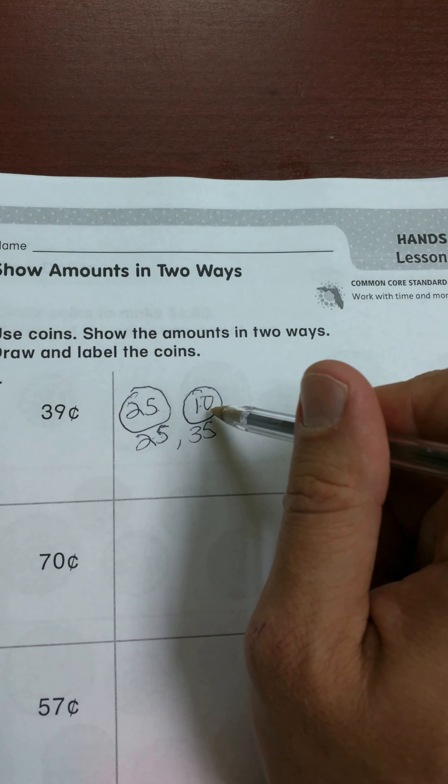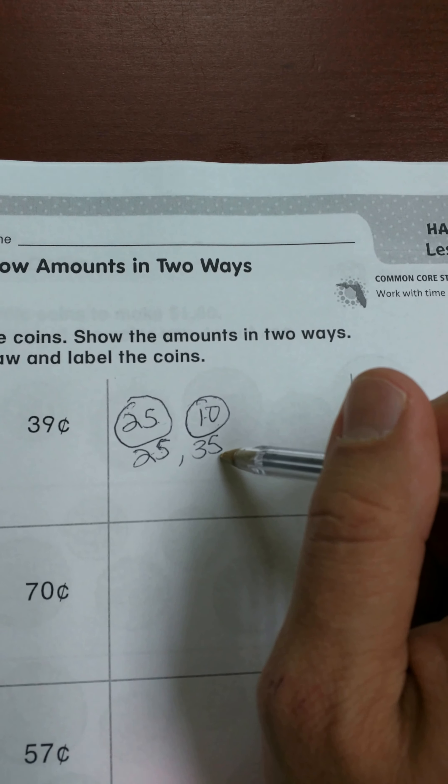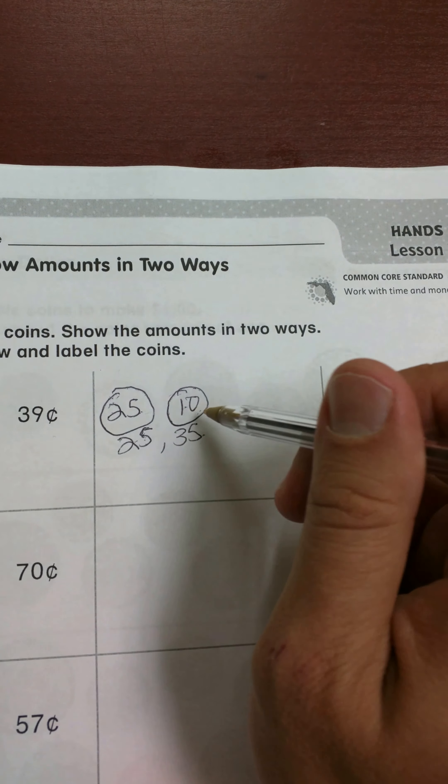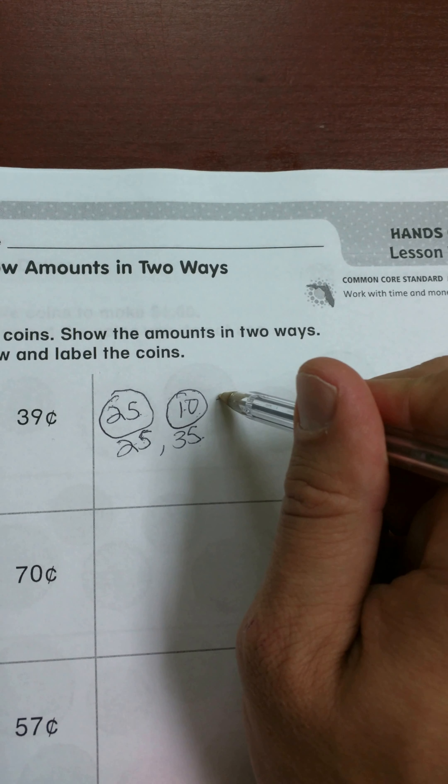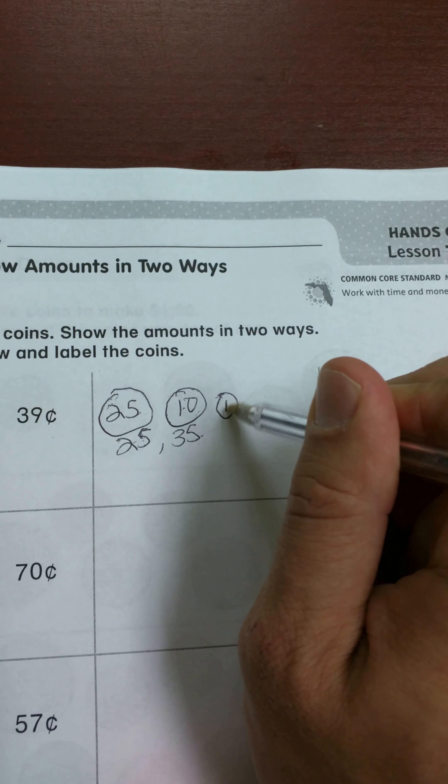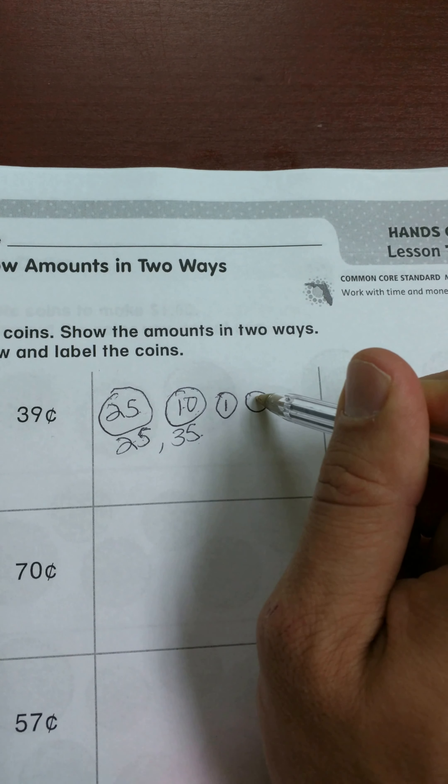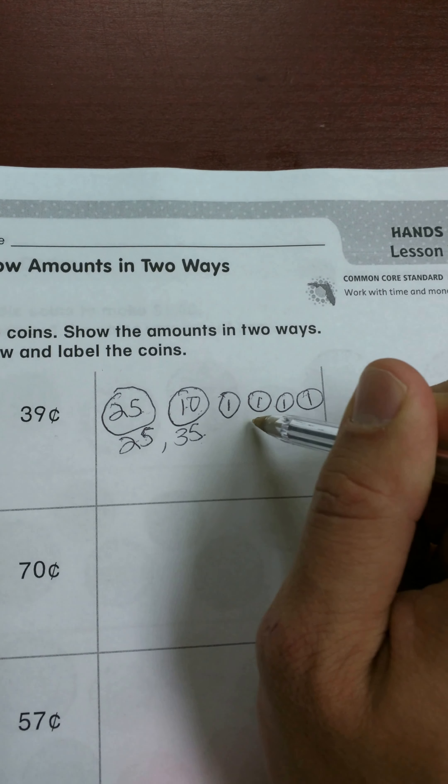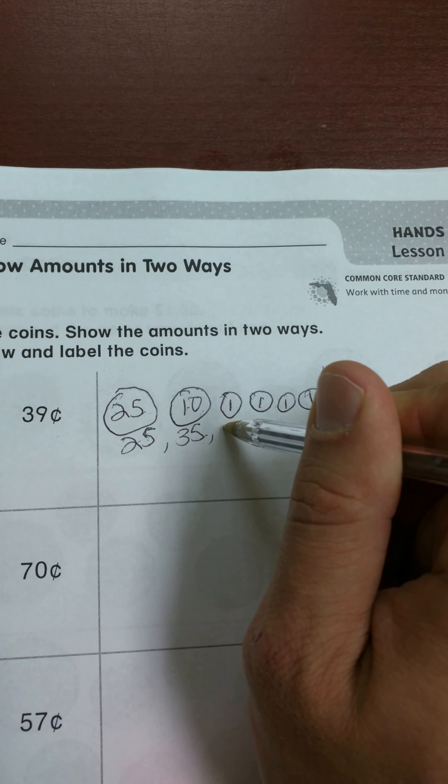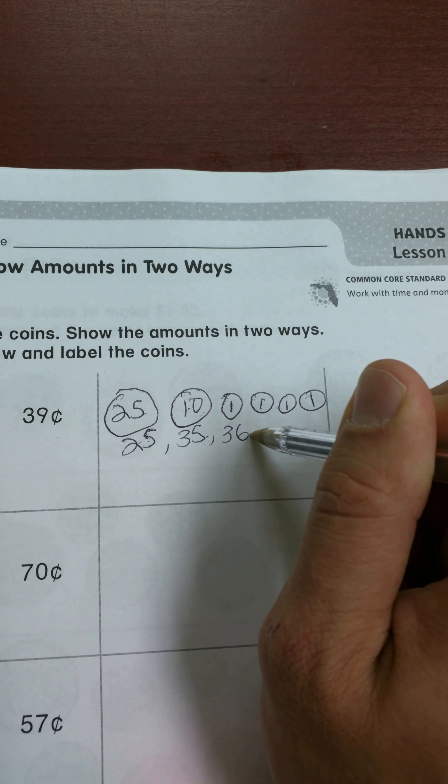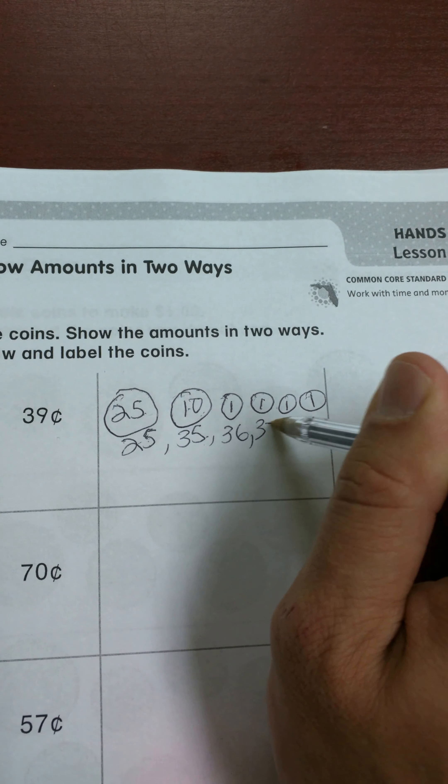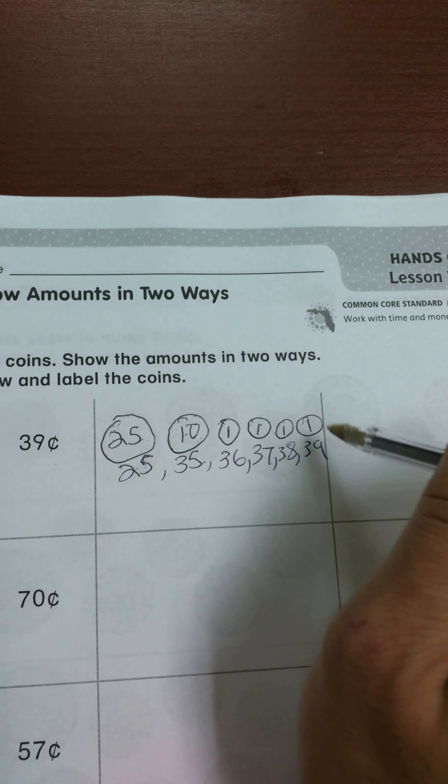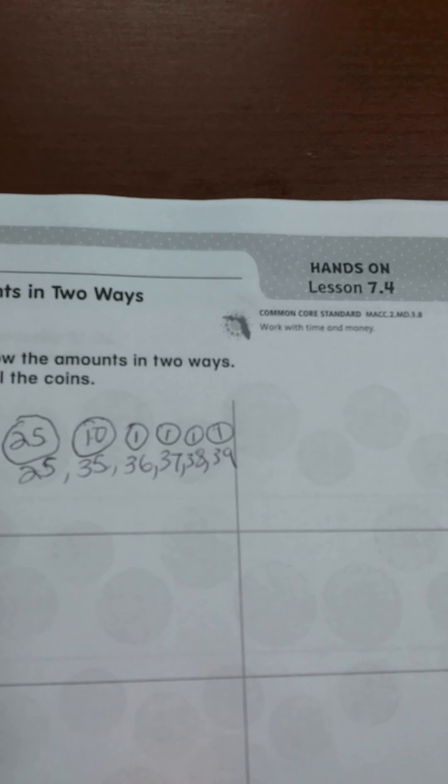Now I can't use another dime because that would be 45. If I use another nickel, that would be 40 and still be too large. So now I need to use pennies. So I know that would be 36, 37, 38, 39. So I'm going to just write that here as well, just show that I know what the value is. And I add these together and now I have 39 cents. So there is one way to make that.